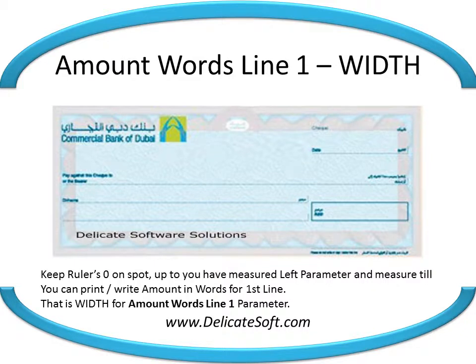Keep the ruler's zero on the top edge of the check and measure till the spot you want to start printing the amount in words line 2. That is the left for amount words line 2 parameter.